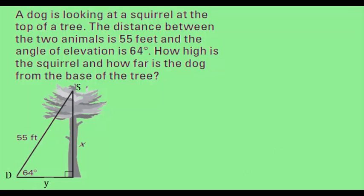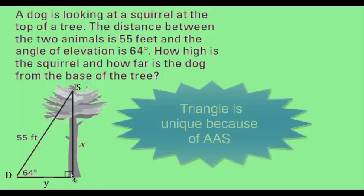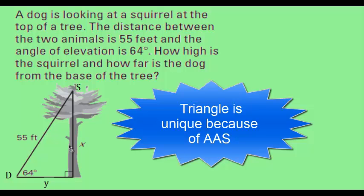Let's look at another application. If we have a dog looking up a tree toward a squirrel, that's an angle of elevation because the dog is looking up at the squirrel. The dog forms a 64-degree angle looking up at the squirrel. We know the distance between the animals is 55 feet. We can find both the height of the squirrel and how far the dog is from the base of the tree — even with just one leg and an angle — because we also know the 90-degree angle.